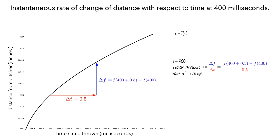We already computed delta f to be 0.572 inches. So the formula becomes 0.572 divided by 0.5. Thus, the average rate over this interval of time from 400 to 400.5 milliseconds is 1.1439 inches per millisecond.